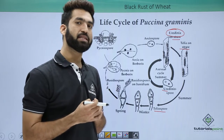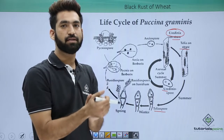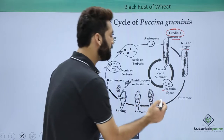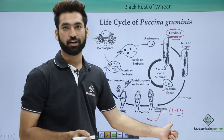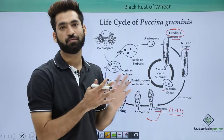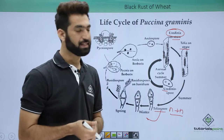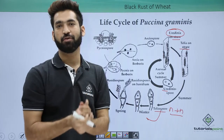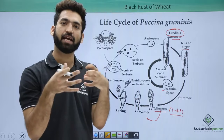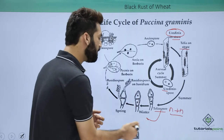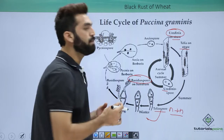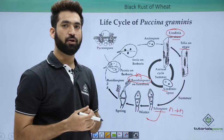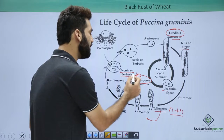During unfavorable conditions, when you harvest the wheat, the teliospores come into the soil. Remember, these teliospores are in a dikaryotic situation — as I have told you, most members of Basidiomycetes show this dikaryotic stage. This dikaryotic stage in the soil will undergo karyogamy, and after karyogamy, meiosis will also occur, producing the third type of spore called basidiospores. Basidiospores are haploid, and these haploid basidiospores will go and infect Barberry leaves.